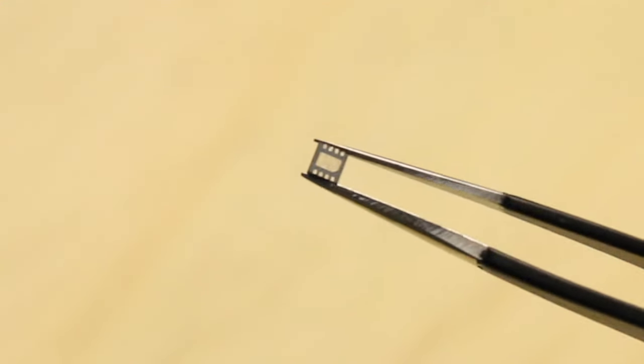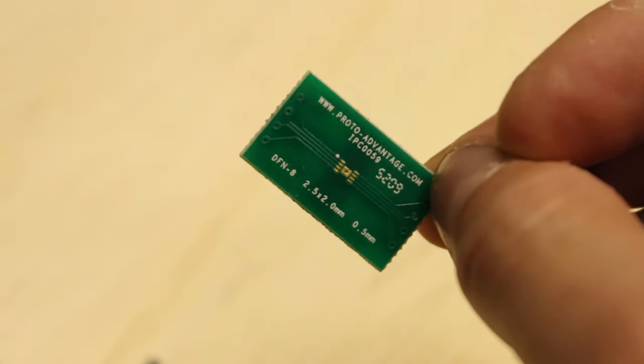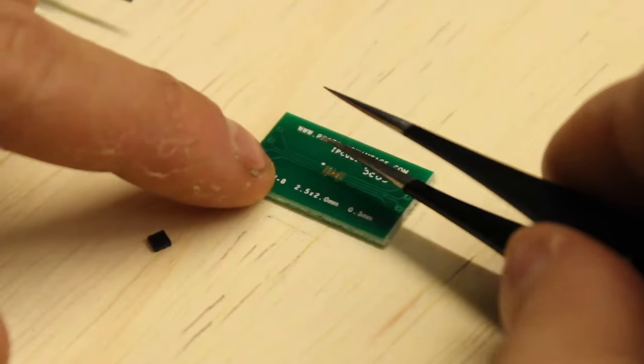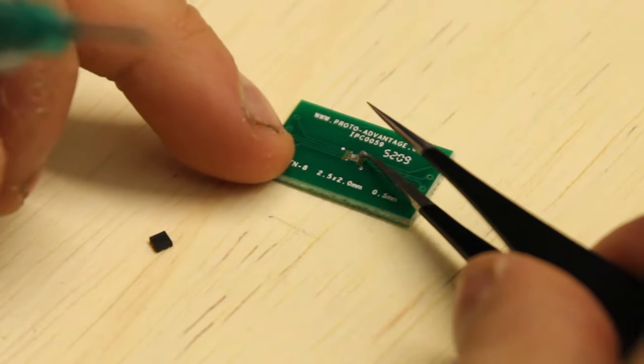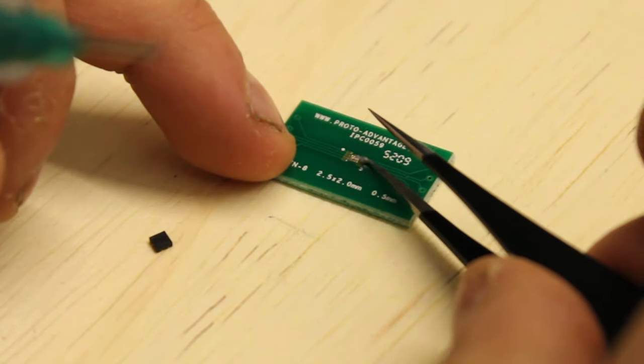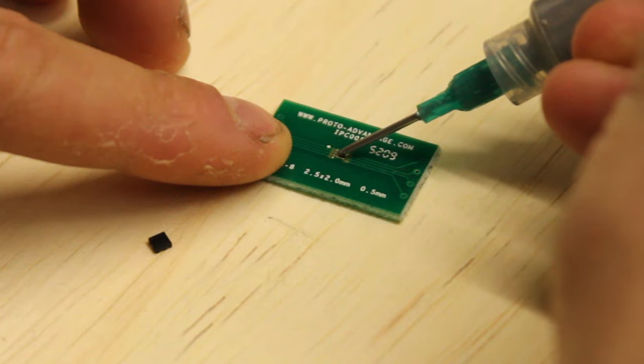First, we'll need to mount the sensor to the breakout board. To do so, I applied some solder paste with fine-tipped tweezers to each of the contact pads. Don't forget the one in the center. If it's a little sloppy, that's okay. When the solder melts, it will naturally spread out and become smooth and neat.